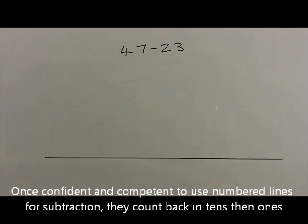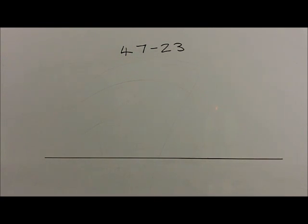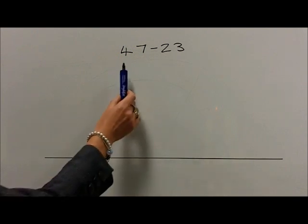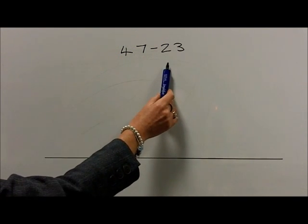As soon as children are confident and competent to use numbered lines for subtraction, they will count back in tens and then in ones. So for example, with the question 47 take 23,